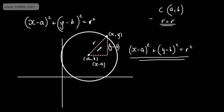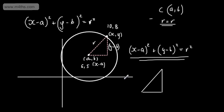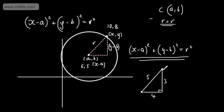Let's use the coordinates (10, 8) as a point on the circle and (6, 5) as the center. Drawing the right-angled triangle: 10 minus 6 is 4, and 8 minus 5 is 3. We have a 3-4-5 triangle, so the radius is 5 units. The equation of this circle is: x minus 6, all squared, plus y minus 5, all squared, equals 25.